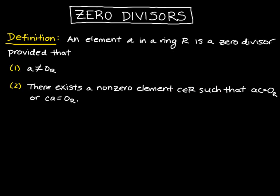Next, let's talk about zero divisors. So we say that an element a is a zero divisor if a is not zero, and also if there exists a non-zero element c so that the product of a and c is zero, or vice versa, if c times a is zero. So basically what this is saying is that an element is a zero divisor if you can multiply two non-zero elements together and get zero.